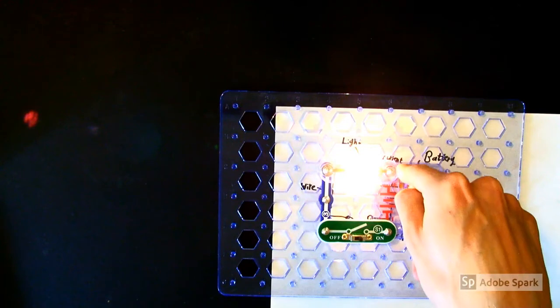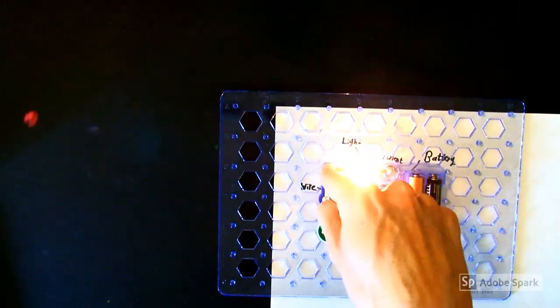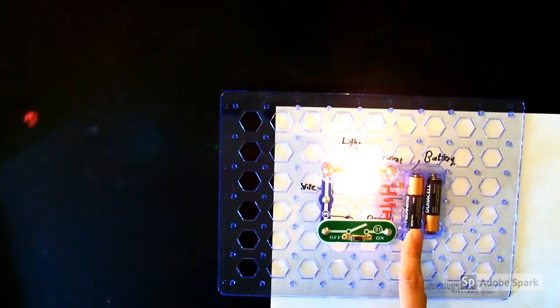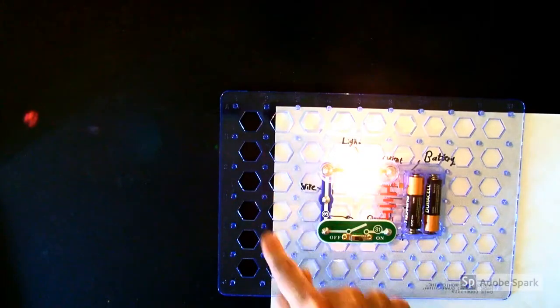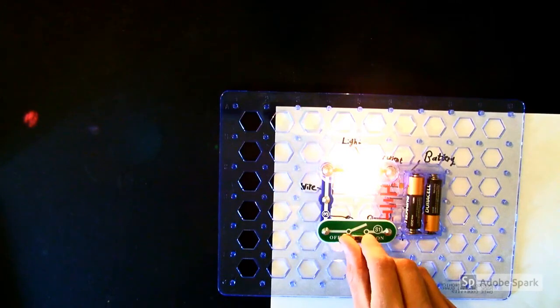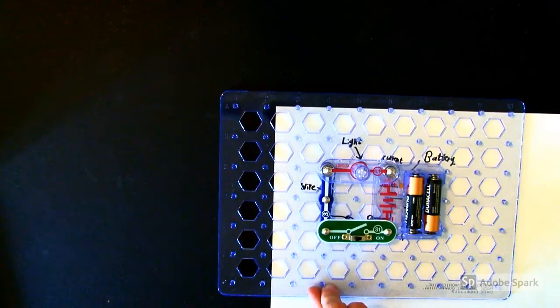Electricity leaves the battery, flows through the light, down the wire, through the switch, and back to the battery where it's recharged, and goes again, and again, and again. If I were to turn off my switch, I turn off the light as well.